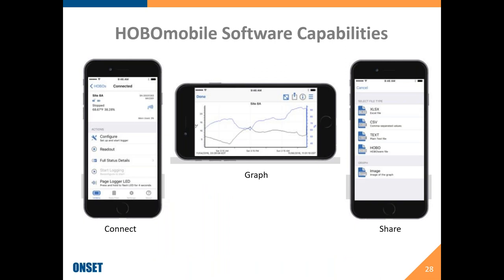A better view of what this looks like on your phone: it's going to find the logger, and you're going to configure it — meaning set up that logging interval, just like setting up an appointment on your iPhone — setting up the date and time and the interval. When reading it out, you will have a graph. On the right-hand side you're tapping on the images and selecting how you'd like to share it. You can share it as an Excel file, a CSV, a text file, a HOBO file, or just an image.